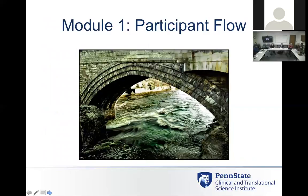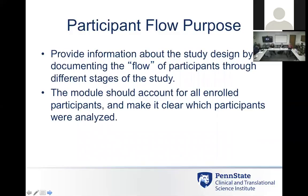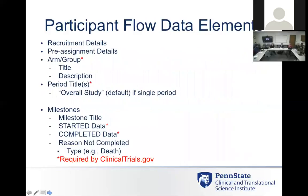Module one is Participant Flow. It's a table showing what happened to the patients included in the trial — including any patients who dropped out or were excluded from the analysis. You're looking at the flow of participants through the different phases of the study, accounting for all enrolled participants and what data is being analyzed for those individuals. The starred categories are the ones required to be completed in the clinical process. Important elements include the study arm grouping and timeframes.